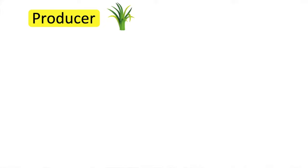So, we begin with the producers. The primary consumers are the animals that eat the plants.